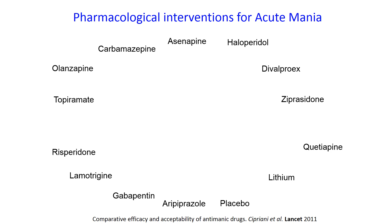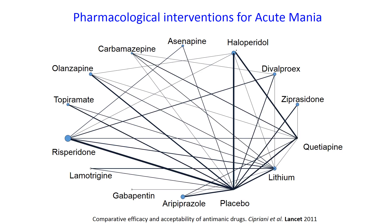Cipriani and colleagues collected 68 randomized control trials involving over 16,000 bipolar patients to compare various pharmacological interventions used for treating acute mania. This collection of trials forms a network of evidence where nodes represent interventions and edges represent at least one direct comparison between interventions.